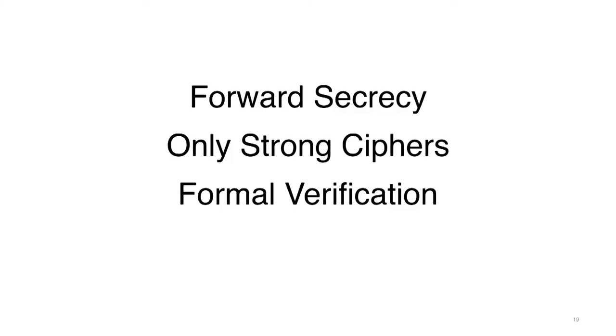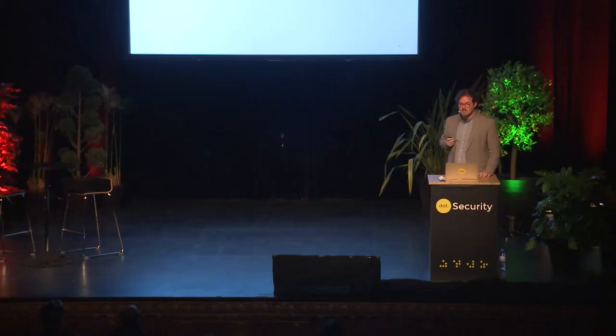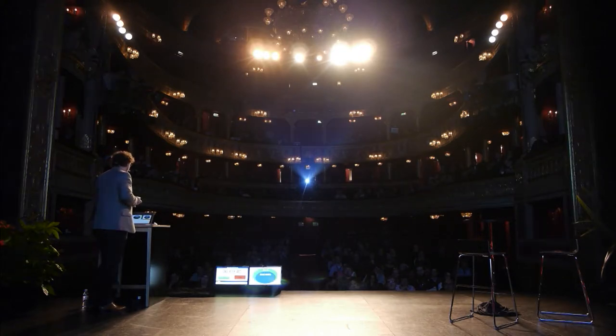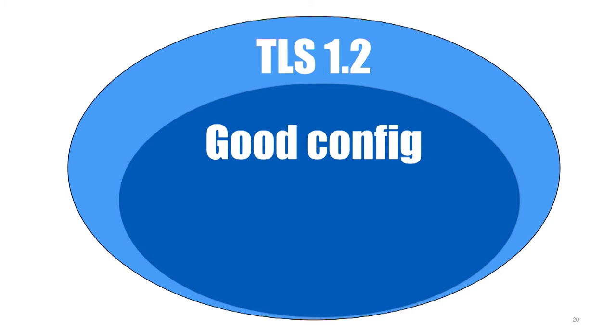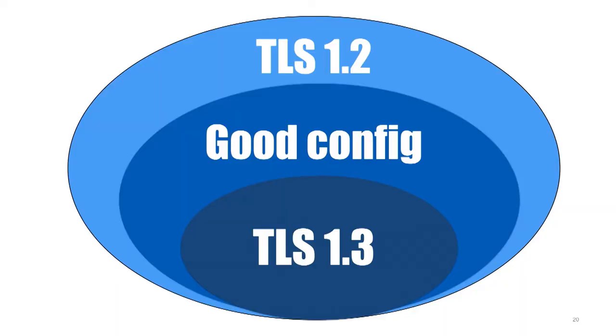When it comes to protecting web security from surveillance, this broke down into three areas: forward secrecy, the use of strong ciphers only, and formal verification. TLS 1.2 could be configured correctly — there are guides to picking the right ciphers — but this wasn't good enough. In TLS 1.3, the goal was to codify this fix, to remove the unsafe options, and to make sure that if you were using this version of the protocol, you could not use it incorrectly.